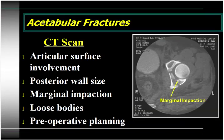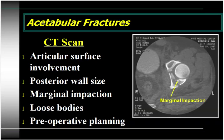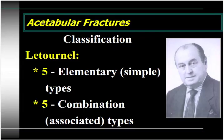CT scan is very important in the classification and treatment decision-making in acetabular fractures. It allows you to determine the extent of articular surface involvement and reveals additional features you simply can't see from plain films alone — for example, the size of posterior wall fragments, the presence or absence of marginal impaction, and the presence or absence of intra-articular loose bodies. All these factors play an important role in preoperative planning and help you decide which approach you're going to use to fix the fracture.